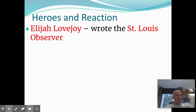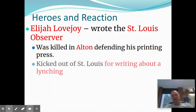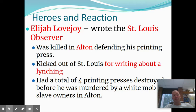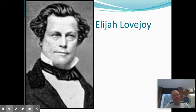Other heroes: Elijah Lovejoy. If you've ever been on campus at SIUE, they have an Elijah Lovejoy library. There's also a Lovejoy school near here. He had a newspaper called the St. Louis Observer. He was killed in Alton, Illinois — about 15 miles north of here — defending his printing press. He had been kicked out of St. Louis for writing about a lynching of a Black man. The locals didn't like that, so they kicked him out and he went to Alton, Illinois. He had a total of four printing presses destroyed before he was murdered. Elijah Lovejoy was murdered for his abolitionist newspaper and its views.